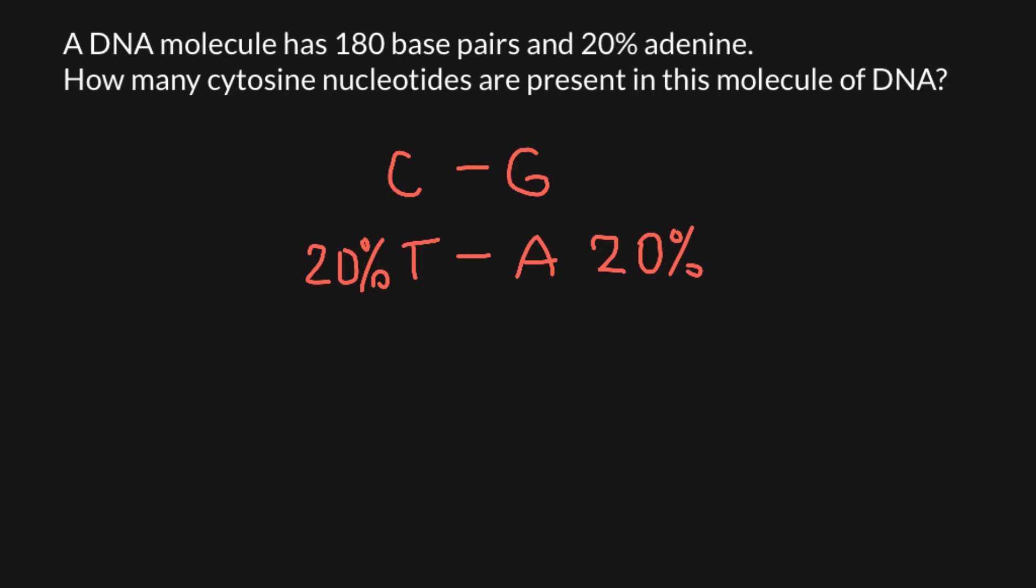So we just have to divide 60% by two, and guanine would be represented as 30% and cytosine also would be represented as 30% in this double-stranded DNA.